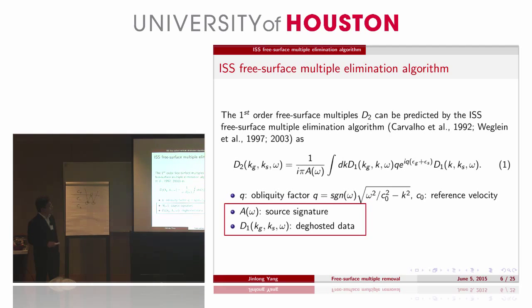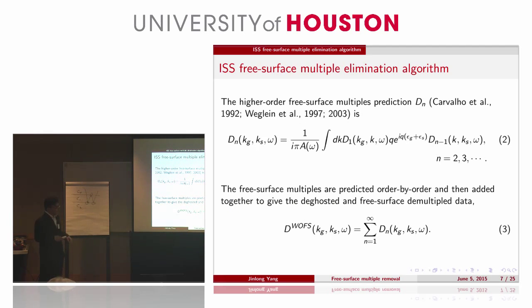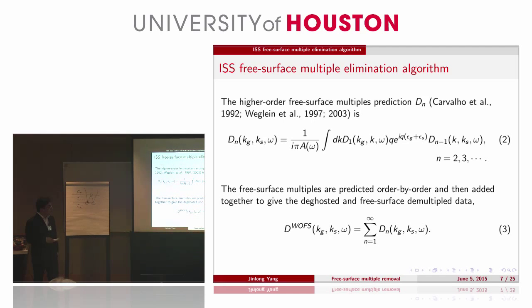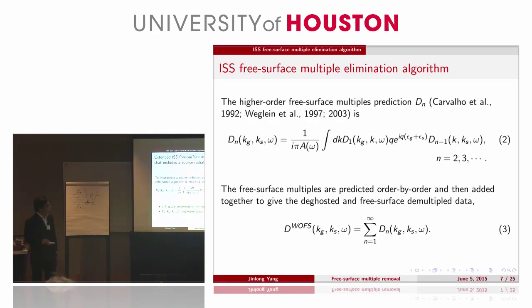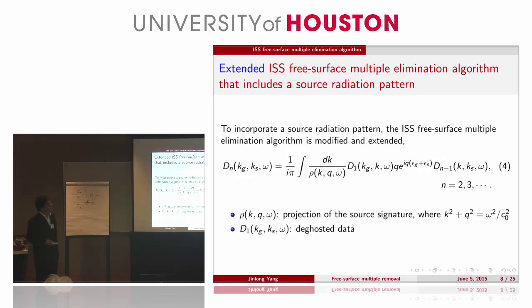We also have a higher-order prediction. We replace the input here with our prediction. And after free-surface multiple prediction, we add them together, and we will get the final result without free-surface multiples. To incorporate the source radiating pattern, we include the source radiating pattern into our algorithm.